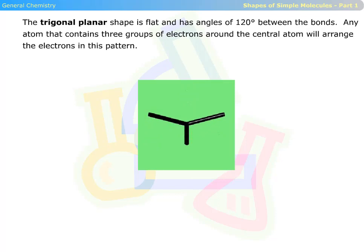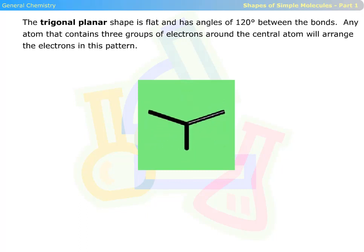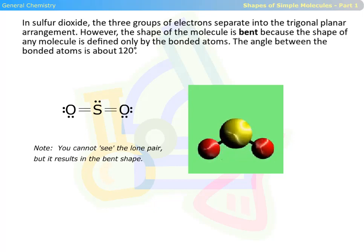The trigonal planar shape is flat and has angles of 120 degrees between the bonds. Any atom that contains three groups of electrons around the central atom will arrange the electrons in this pattern. In sulfur dioxide, the three groups of electrons separate into the trigonal planar arrangement. However, the shape of the molecule is bent because the shape of any molecule is defined only by the bonded atoms. The angle between the bonded atoms is about 120 degrees.